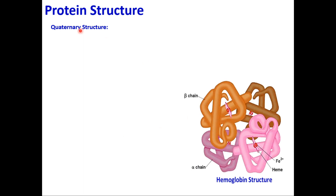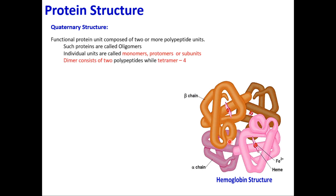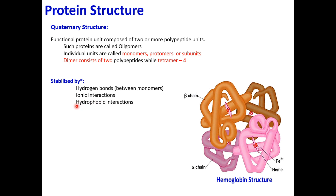Quaternary structure involves two or more different polypeptides joining together to form a functional protein. For example, hemoglobin comprises two alpha chains and two beta chains — four separate polypeptides joined via hydrogen bonds and disulfide linkages. A protein composed of four polypeptides is a tetramer; composed of two is a dimer. Quaternary structures are stabilized by three forces: hydrogen bonds, ionic interactions, and hydrophobic interactions. Examples: hemoglobin, aspartate transcarbamylase, lactate dehydrogenase.